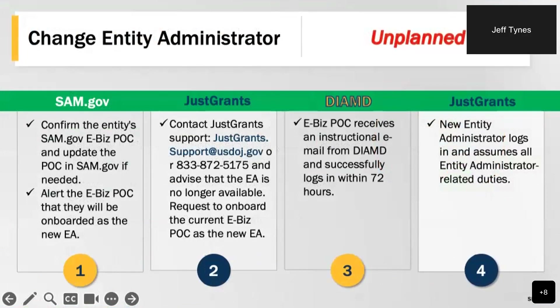When the entity administrator is no longer available to transfer the role, the entity must take the following steps. In SAM.gov, confirm the entity's eBiz point of contact and update it as needed, then alert that eBiz point of contact that they will be onboarded as the new entity admin. In JustGrants, contact JustGrants support at justgrants.support@usdoj.gov or call 833-872-5175, advising them that the entity administrator is not available and requesting they onboard the current eBiz point of contact as the new entity administrator. The new eBiz point of contact will receive an instructional email from Diamond and must successfully log into JustGrants within 72 hours. The new entity administrator will then log in and assume all entity administrator duties.